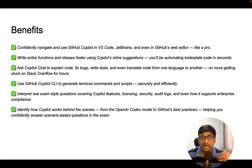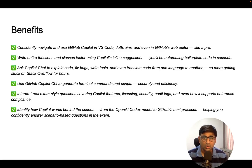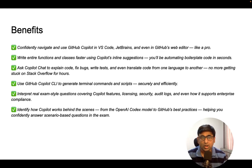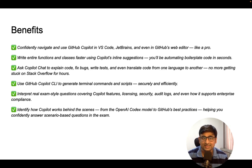You can write entire functions and classes faster using Copilot's inline suggestions. There are various scenarios where you can ask GitHub Copilot to improve existing code, write an entire function or class in minutes, or explain legacy code you want to understand. You can also ask what a piece of code does or what its logic is. Even writing test scripts — which can take one or two days — can be done in seconds by simply describing your scenario and asking Copilot to write a unit test script.